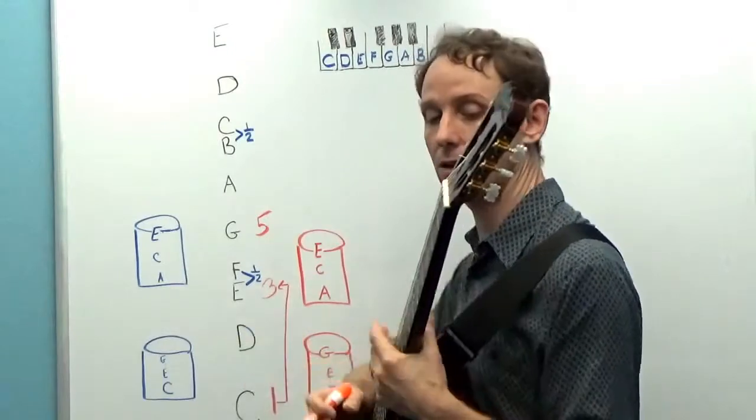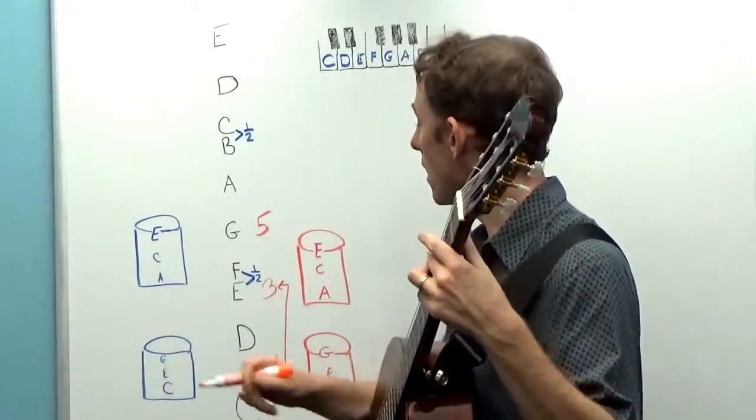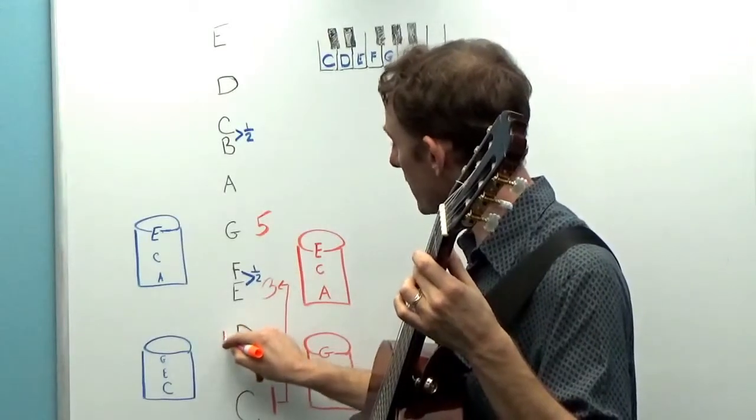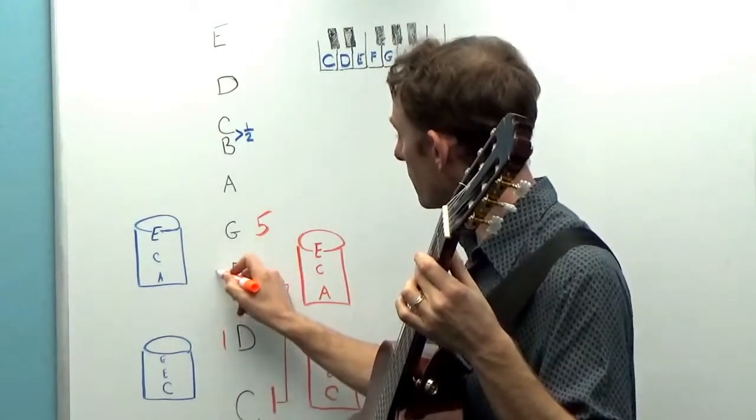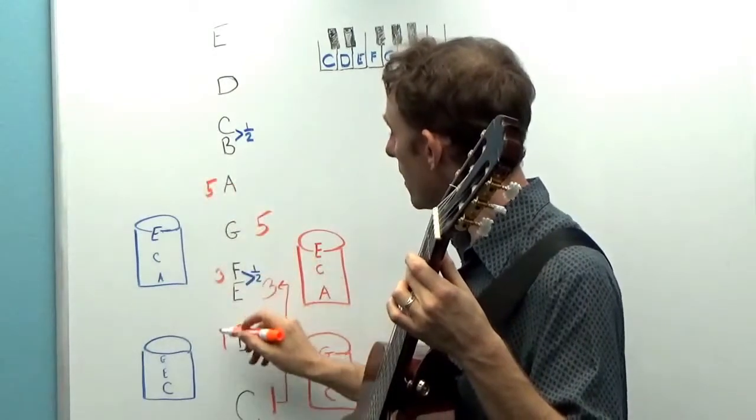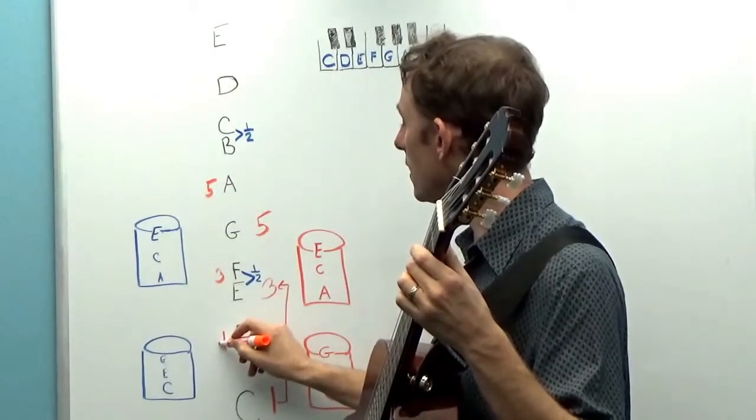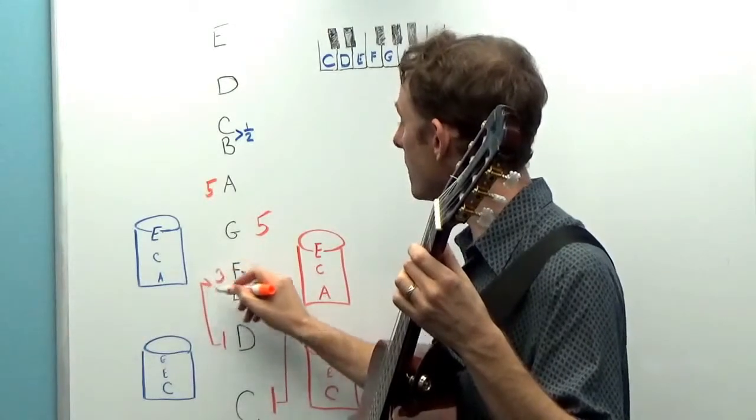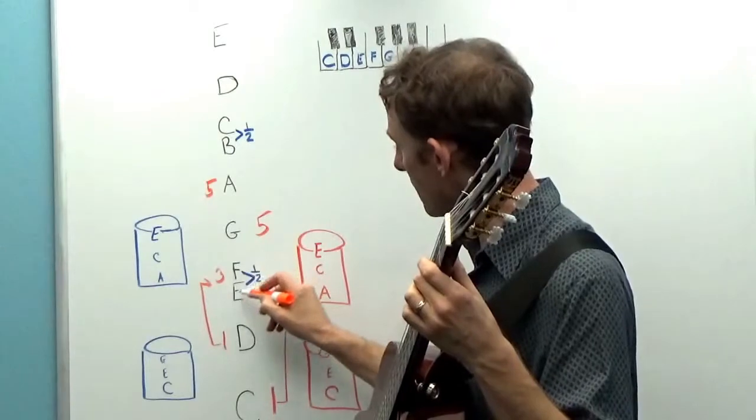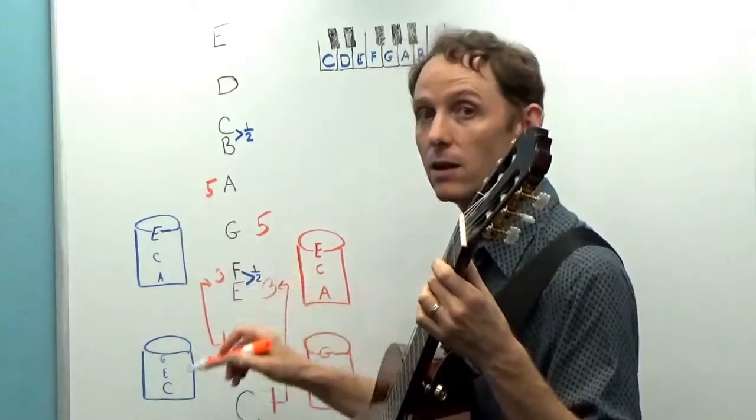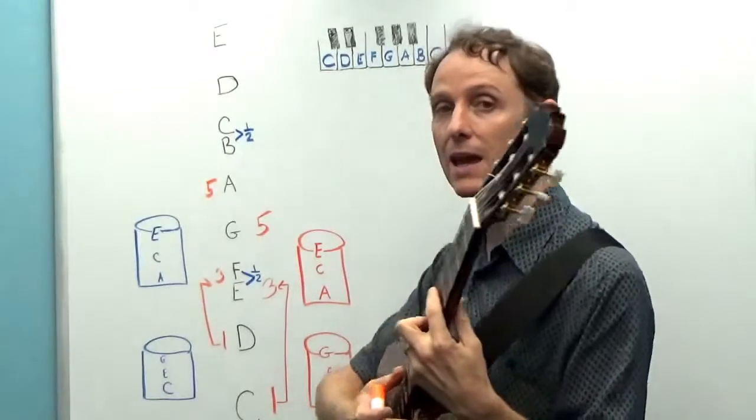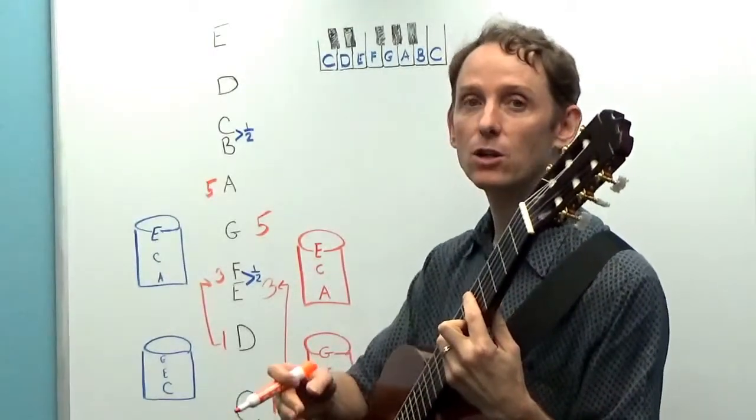If on the other hand we were to move to starting on D, D would become one, a third up from that would be F, and a fifth up would be A. And now from D we have D to F. Now because there's only a whole step and a half step, because we have this E to F here, that's going to be a minor third and so it will make a minor chord.